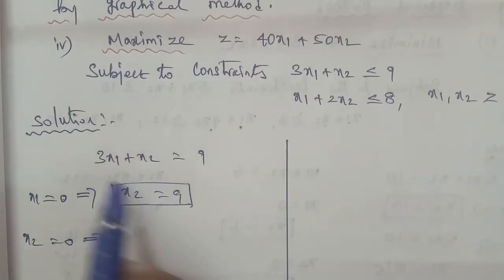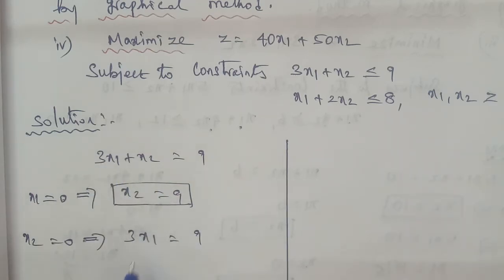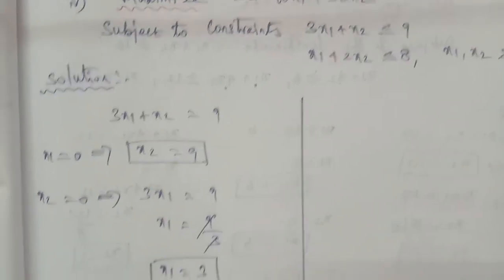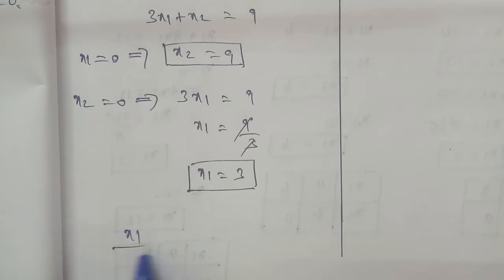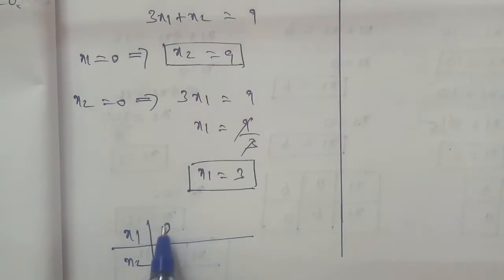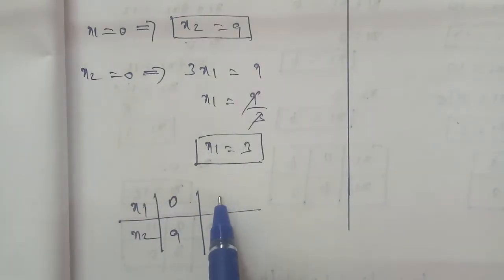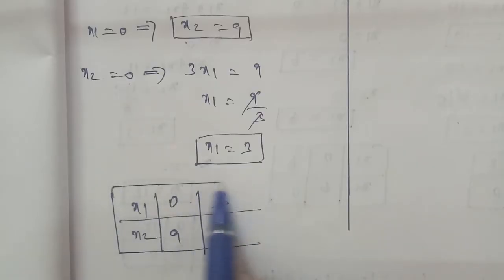Next, when x2 is equal to 0, so 3x1 is equal to 9, x1 is equal to 9 by 3, cancel by 3, x1 is equal to 3. Now if you have the points in the table: x1 is equal to 0, x2 is equal to 9; and x1 is equal to 3, x2 is equal to 0.